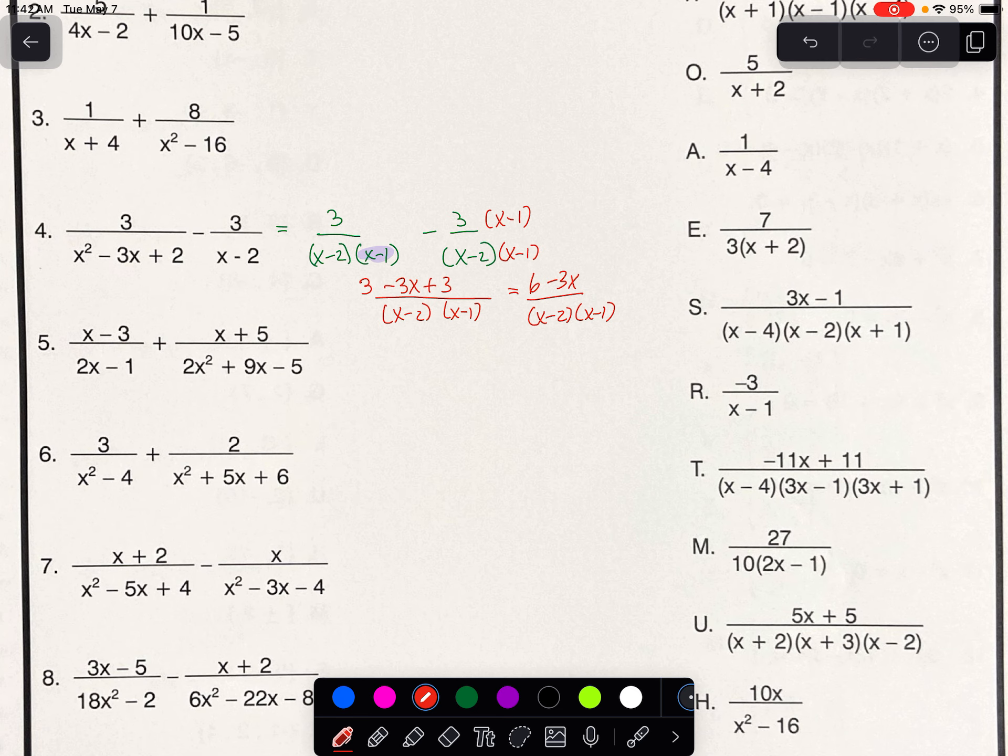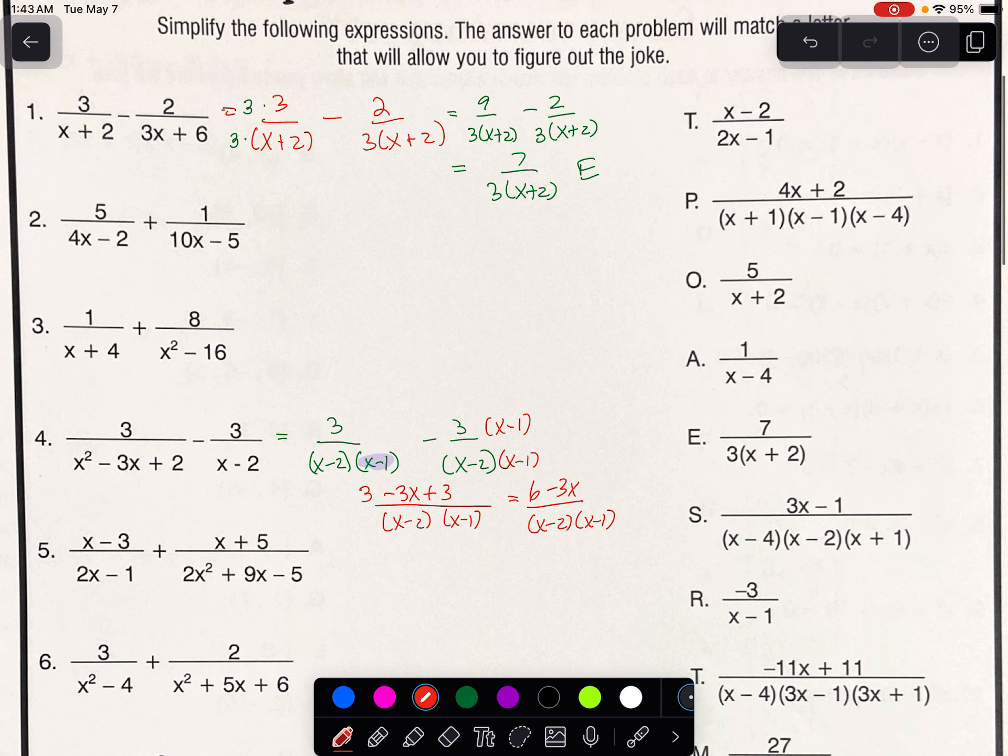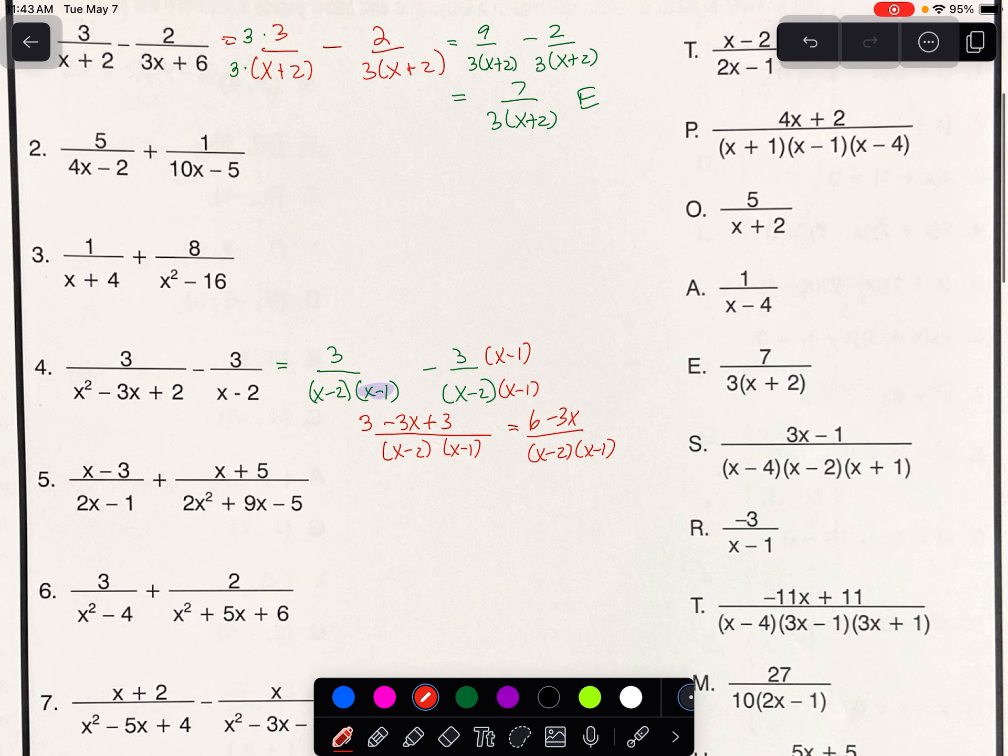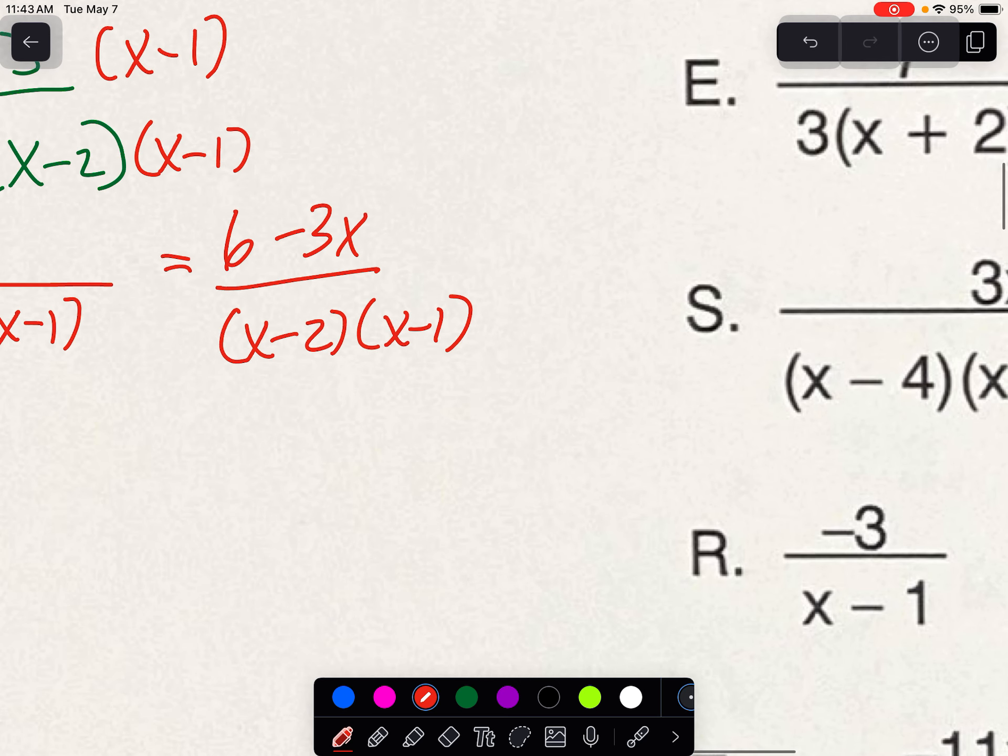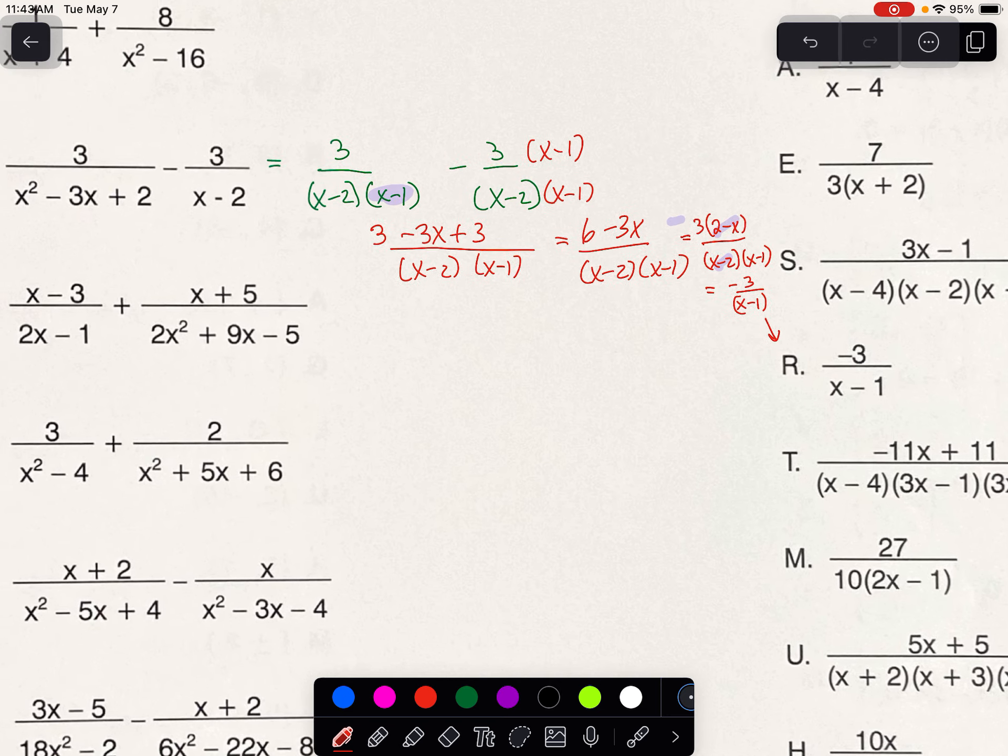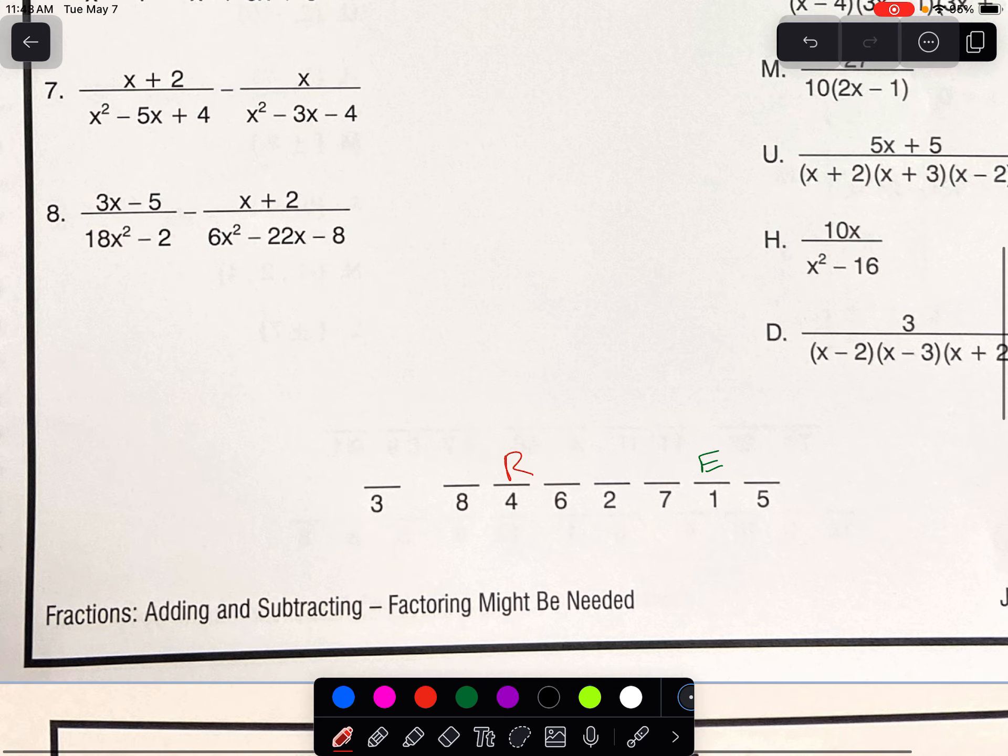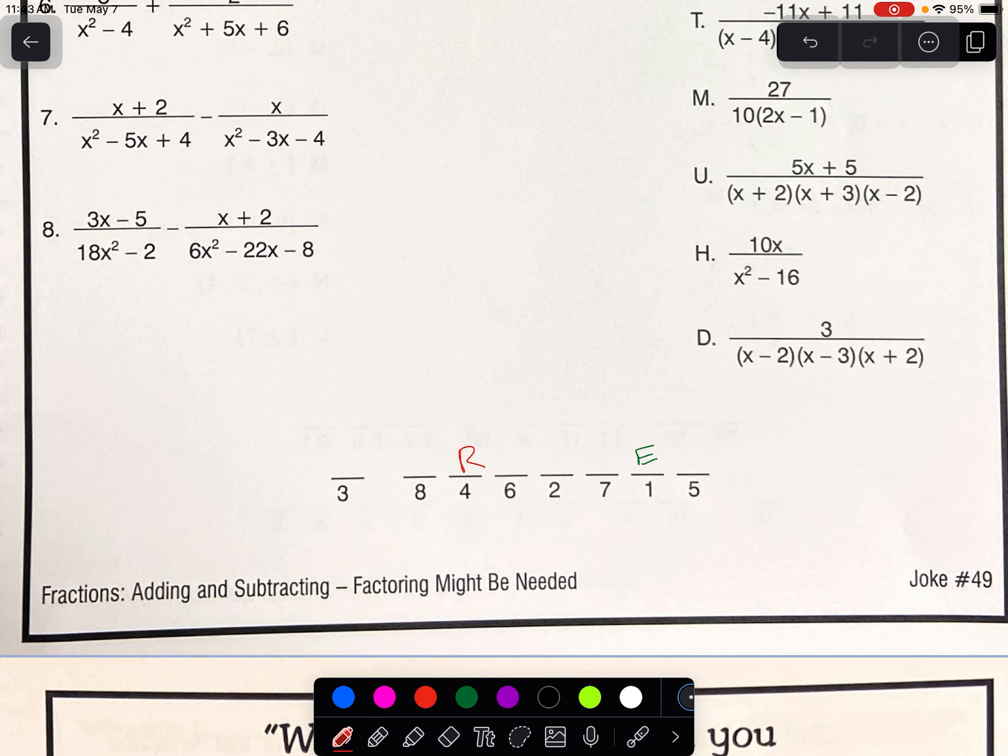Now if you go to look for that, I believe it's not going to be there. And this is why. If on the top here we take out a 3, we are left with 2 minus x. Now remember, a 2 minus x and an x minus 2 can cancel each other out as long as you leave a negative 1 behind. So we should see the answer as negative 3 over x minus 1, which is R right here. So number 4 is R. That's what you're doing there.